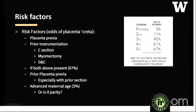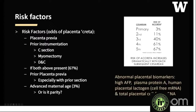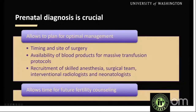Risk factors for placenta creta spectrum: placenta previa combined with a prior c-section carries the highest odds, with risk of placenta creta spectrum increasing to 67%. Myomectomy or D&C also increase risk, though to a smaller degree. Advanced maternal age carries about 3% increased risk, though it's unclear if it's age or parity. Clinical markers include placental biomarkers such as high AFP, plasma protein A, human placental lactogen, and total placental cell-free mRNA.